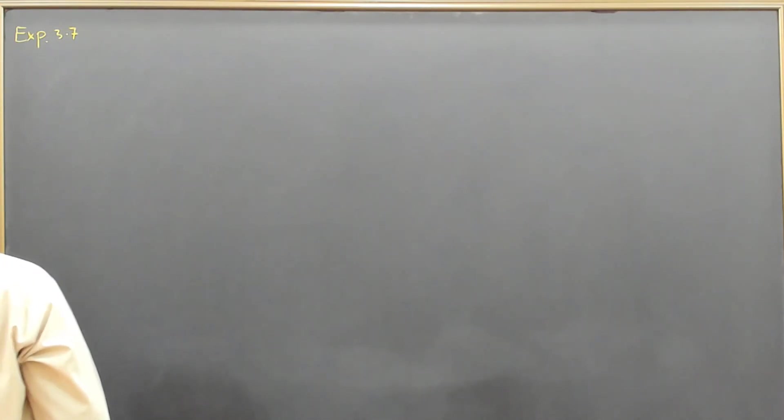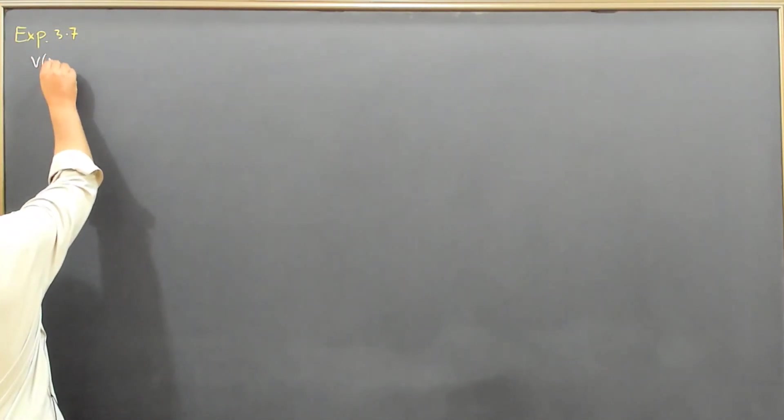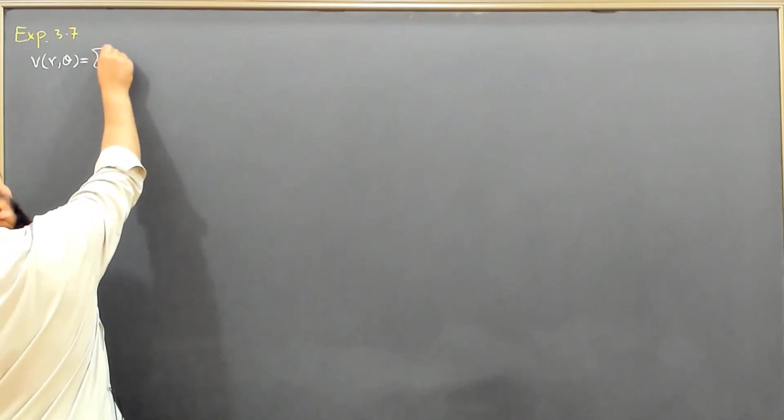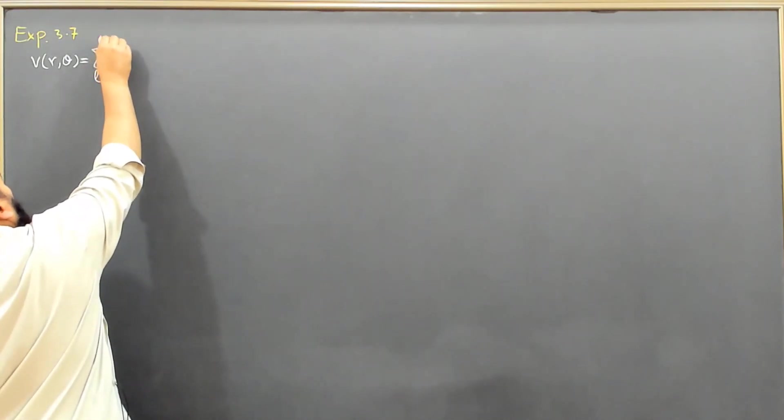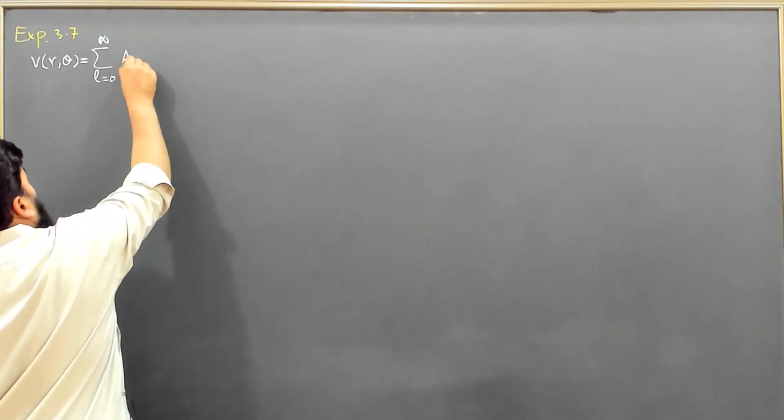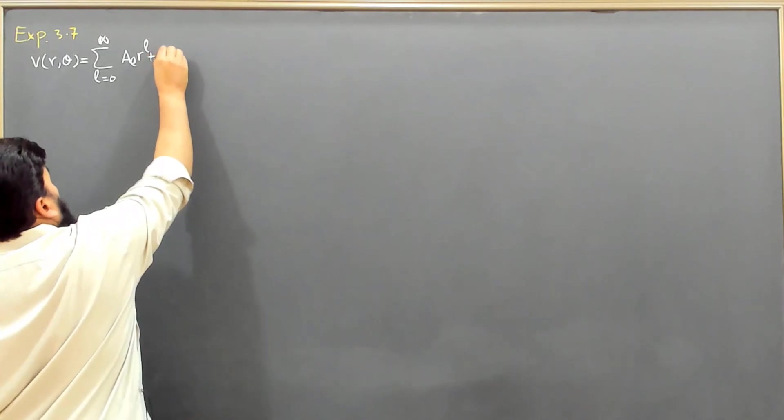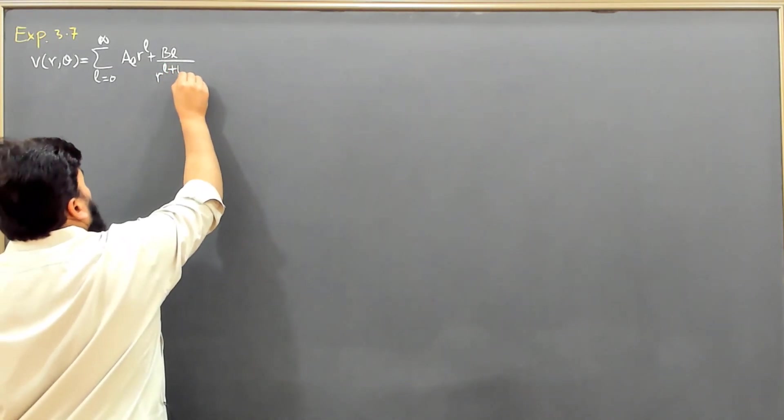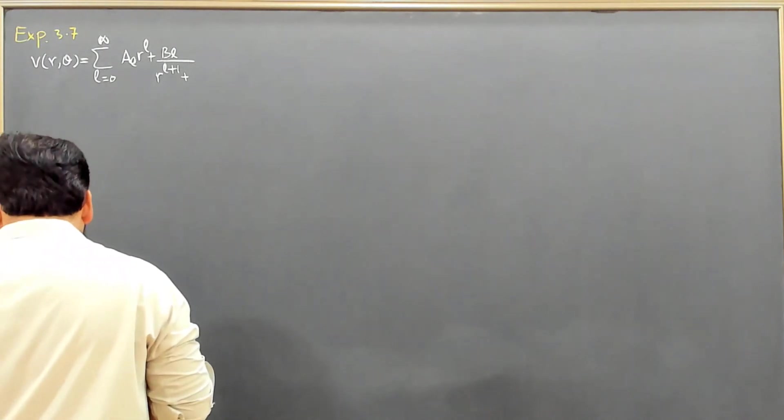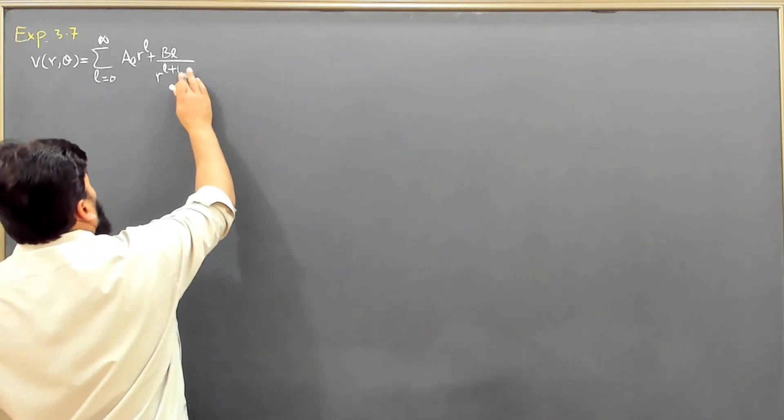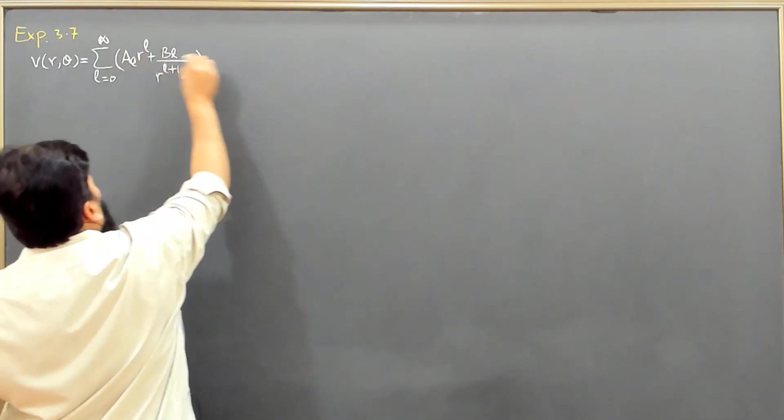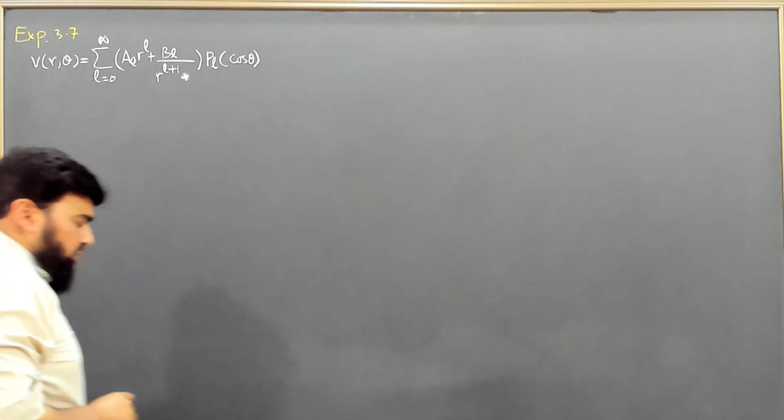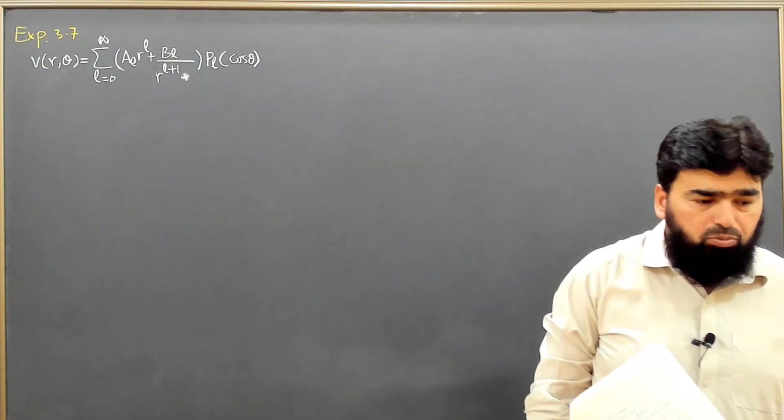So we will go on with our solution. V(R,θ) equals summation on L running from 0 to infinity: AL·R^L plus BL/R^(L+1), multiplied by PL(cos θ). This was the solution we derived earlier in the form of Legendre polynomials.